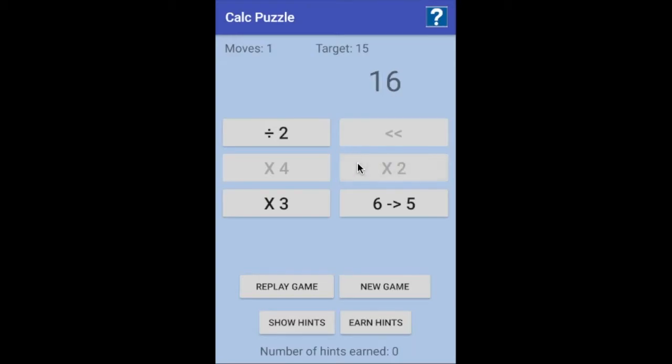We can take our two times four to get to eight. Eight times two is sixteen. And now this button will turn this number into this number. So six turns into five, and we get to fifteen. Our fifteen, where we're currently at, now matches our target, and we won the game.